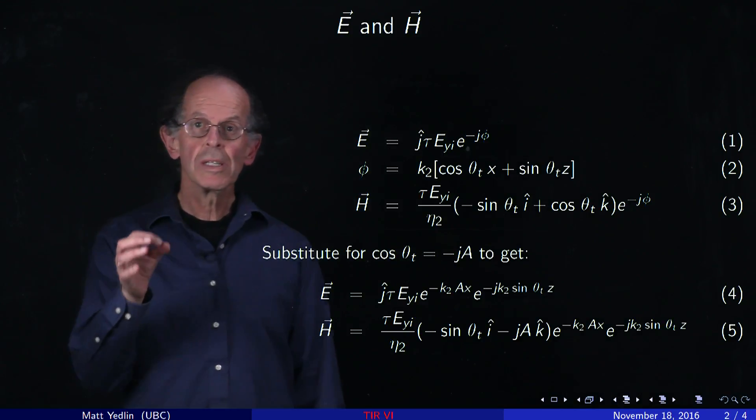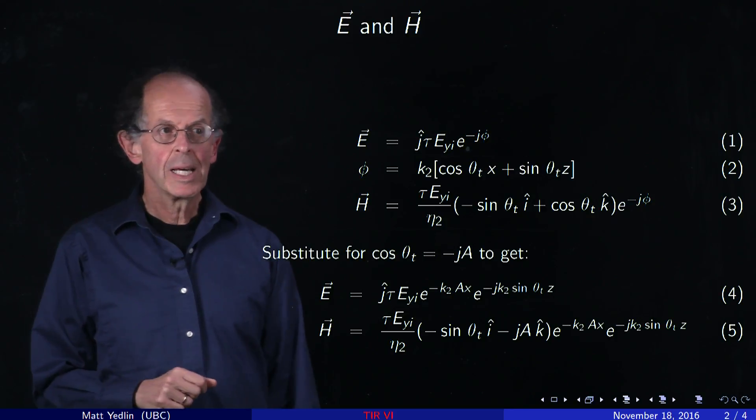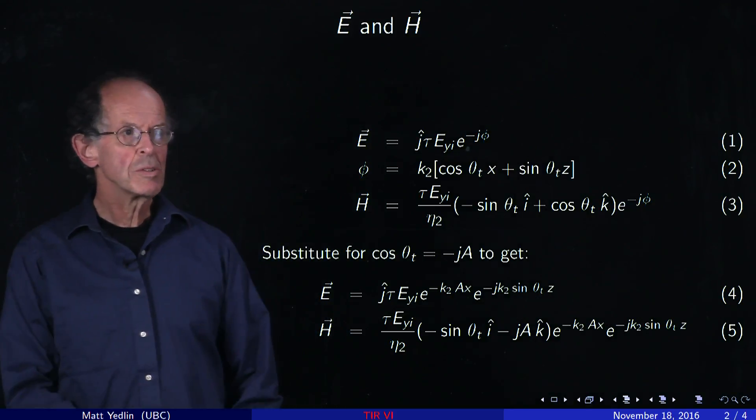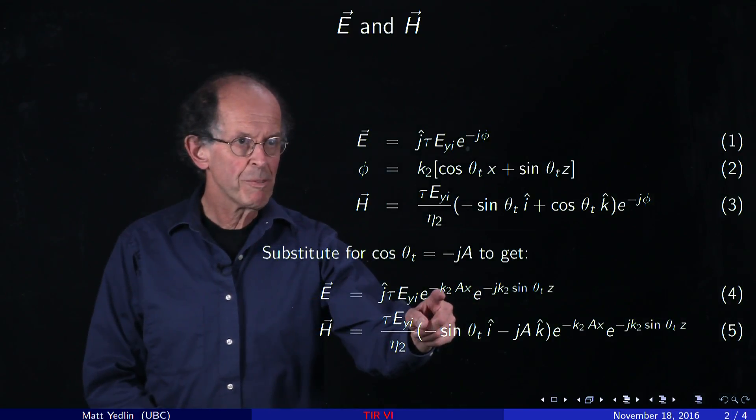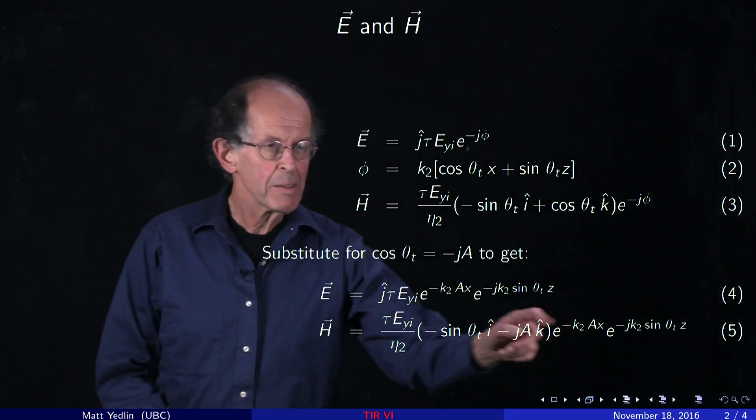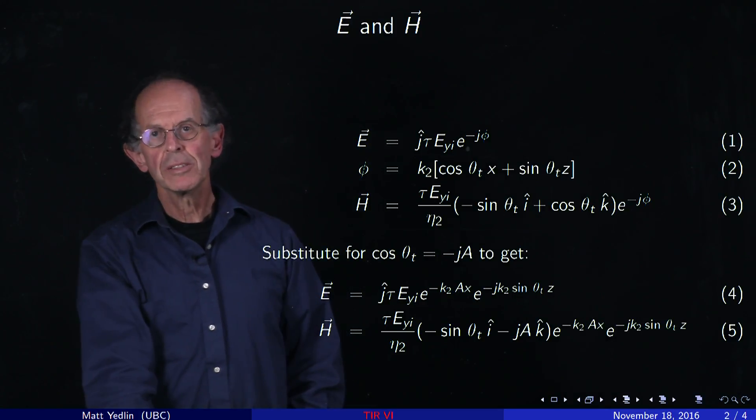Now, since we're supercritical, cos theta t is purely imaginary. And when we substitute it into equations one and three, you can see that in equation four and five we have a decaying exponential as we go away normal to the interface.